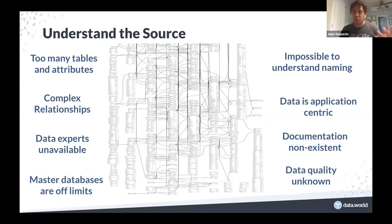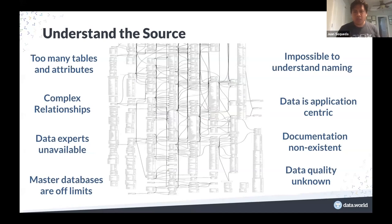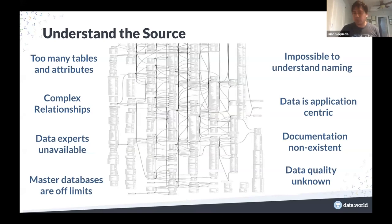Now let's talk about the real problems we see in the real world when it comes to data integration. If you look at enterprise source databases, we are talking about really complex systems with way too many tables and too many attributes. Systems like Oracle ERP may have 20,000 tables. We are not talking about a textbook database — we are talking about thousands of tables where the naming of tables and columns can be impossible to understand. If you are working with SAP, they may even be written in German.